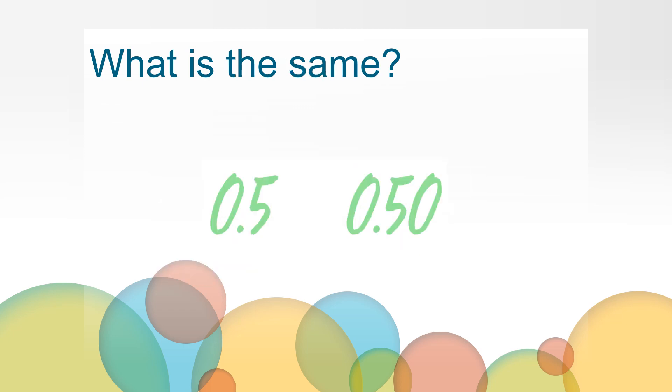How would we read these numbers? The first number is 0 and 5 tenths. The second number is 0 and 50 hundredths. What is the same about these two numbers? Both numbers have the digits 5 and 0 and they both have a decimal point. These numbers also have the same value. More on that in a minute.